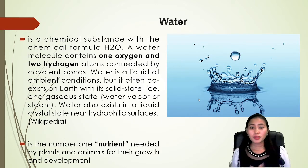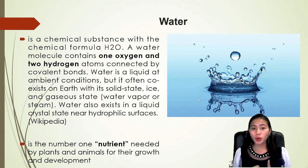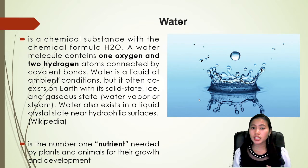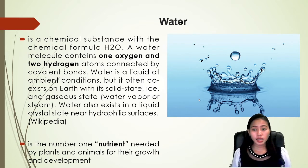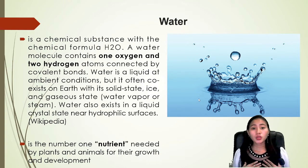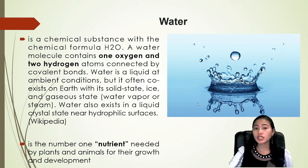Water. In chemistry, water is composed of two hydrogen atoms and one oxygen connected with covalent bonds. Water is a liquid at ambient conditions but it often coexists on earth with its solid state, ice, and gaseous states like water vapor and steam. Water also exists in a liquid crystal state near hydrophilic surfaces. Water is the number one nutrient needed by plants and animals for their growth and development, and even human beings need water for survival — it is very essential.